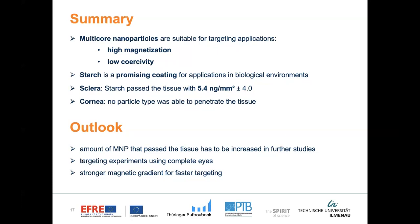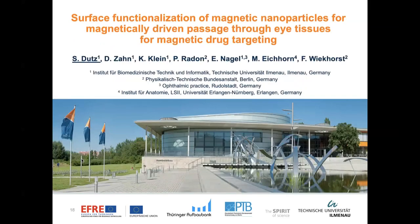In summary, we have prepared multicore particles which are very suitable for targeting applications, with high magnetization and low coercivity. Starch appears to be the most promising material for such targeting experiments, and we obtained transport of starch-coated particles through the sclera. No transport was observed through the cornea for any tested particles. In future work, we want to increase the amount of particles able to pass through the tissue, work with complete eyes rather than just tissue samples, and use stronger magnetic field gradients for faster targeting. I would like to thank you for your kind attention and also thank the Thüringer Aufbaubank for funding our study.